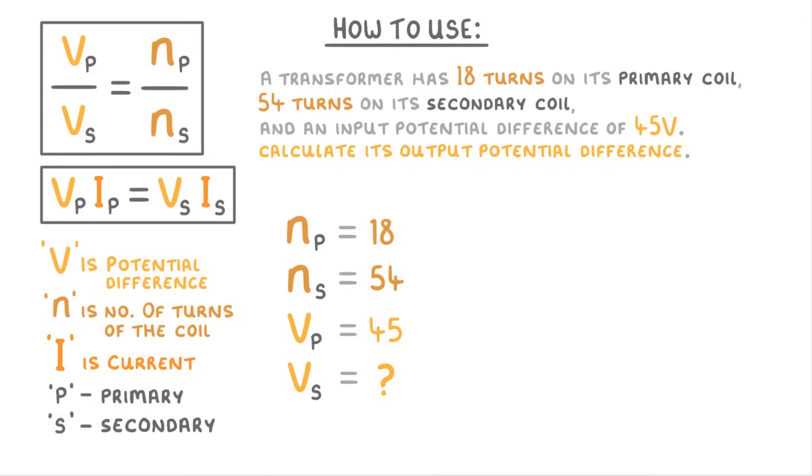So plugging in what we know, we get 45 over Vs equals 18 over 54. 18 over 54 is just 0.33.